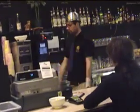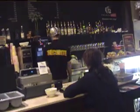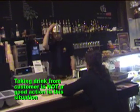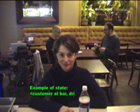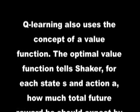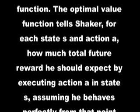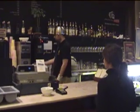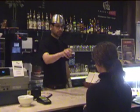Shaker uses a well-known reinforcement learning algorithm called Q-learning. Q-learning will enable Shaker to decide what action to select in each situation. In reinforcement learning we have the notion of states, which basically correspond to situations. Q-learning also uses the concept of a value function. The optimal value function tells Shaker, for each state S and action A, how much total future reward he should expect by executing action A in state S, assuming he behaves perfectly from that point onward.